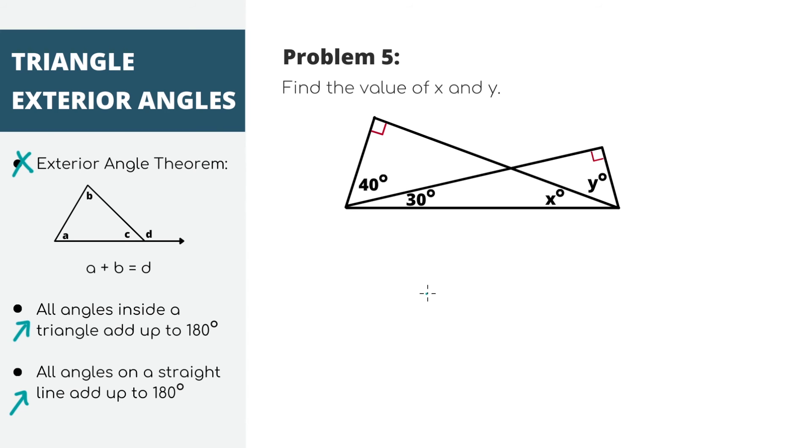I see this triangle here, and because all angles inside a triangle add up to 180, I know this angle equals 50 because 40 plus 90 plus 50 equals 180. Now, because these two angles are on the same line, I know the angles add up to 180.